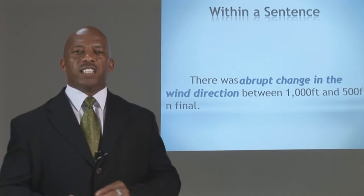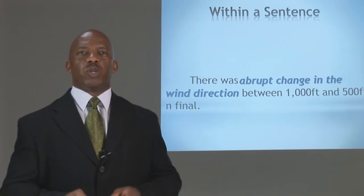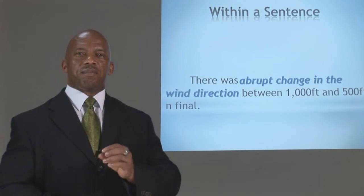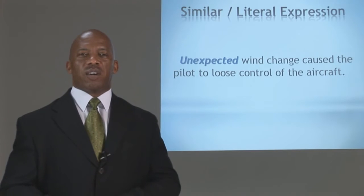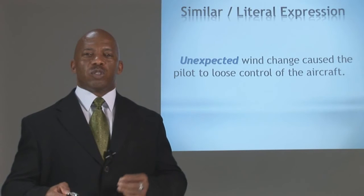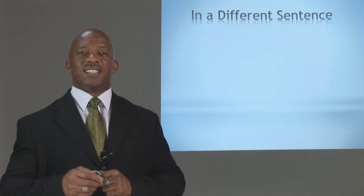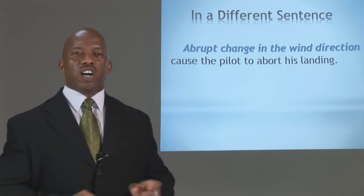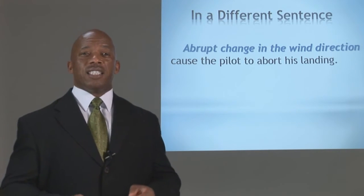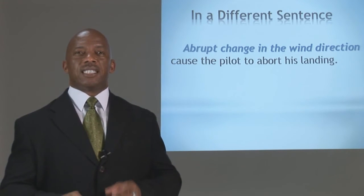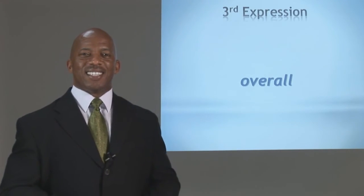In a sentence: there was an abrupt change in the wind direction between 1,000 feet and 5,000 feet on final. The literal expression: an unexpected wind change caused the pilot to lose control of the aircraft. Or, sudden or abrupt wind change caused the pilot to lose control of the aircraft. In a different sentence: abrupt change in the wind direction caused the pilot to abort his landing. You might relate this to wind shear or turbulence. An unexpected or sudden change in the wind direction caused the pilot to abort his landing.